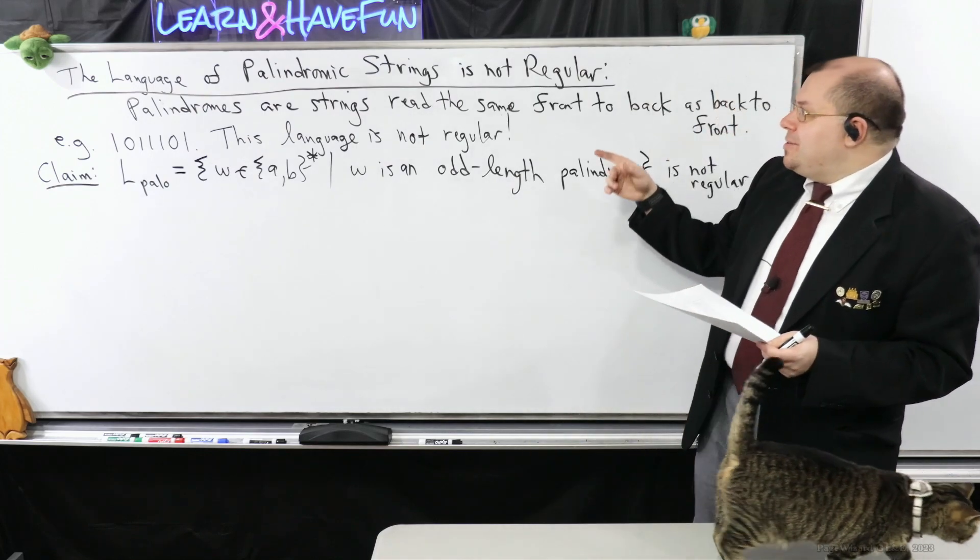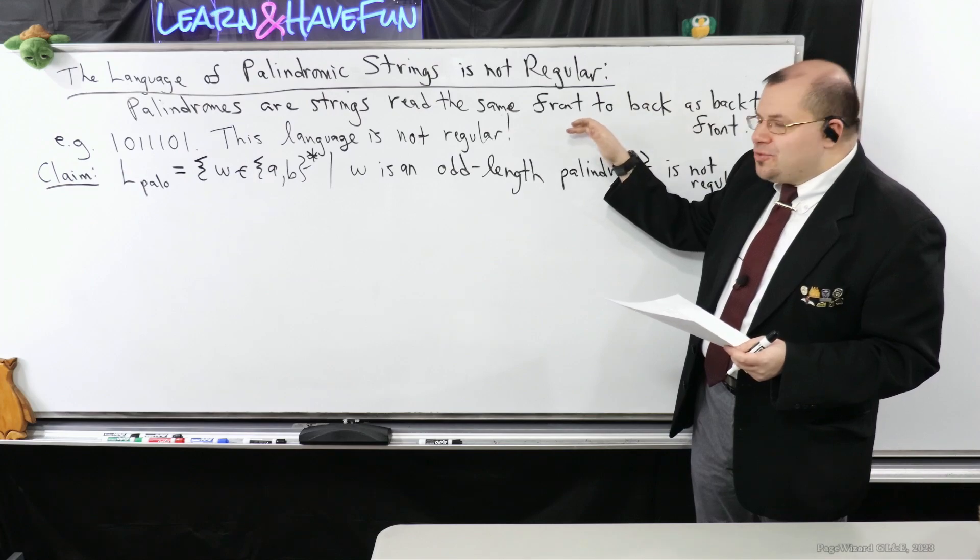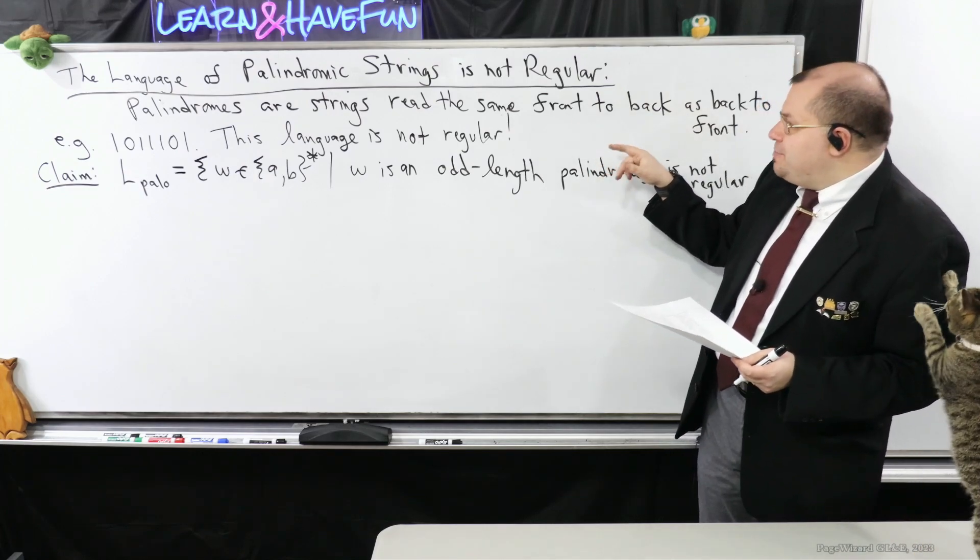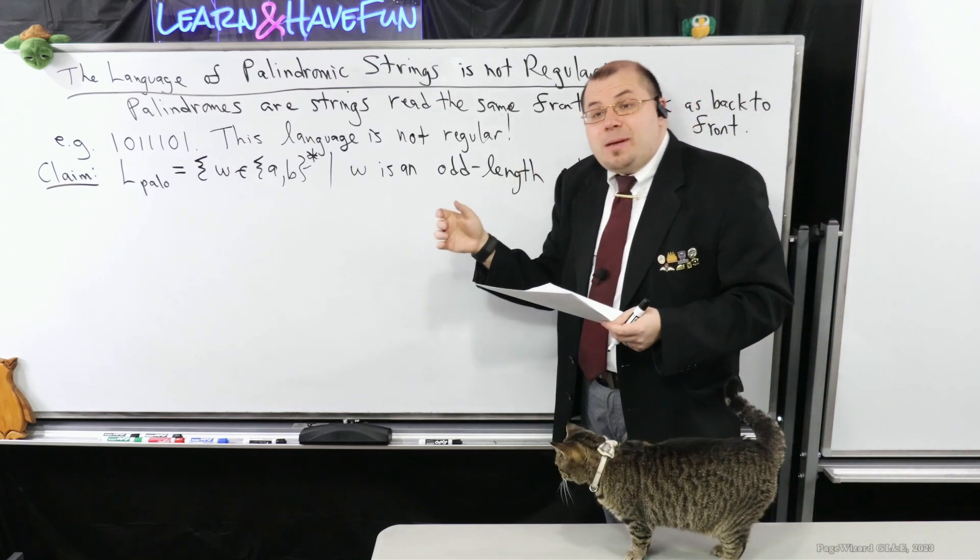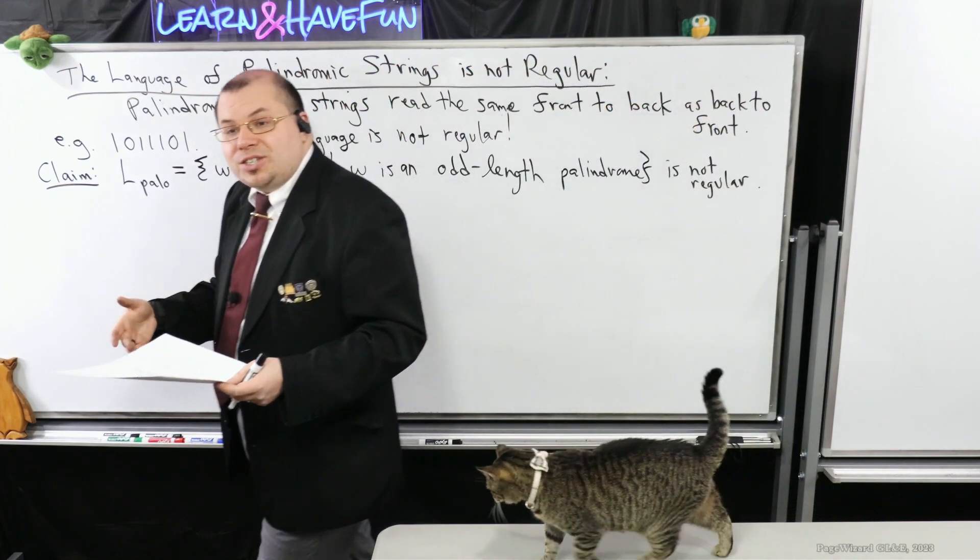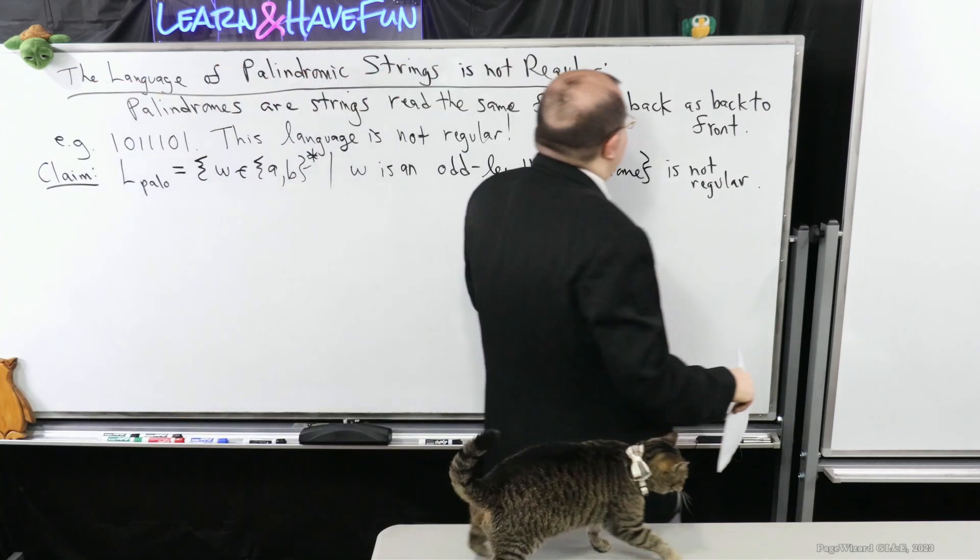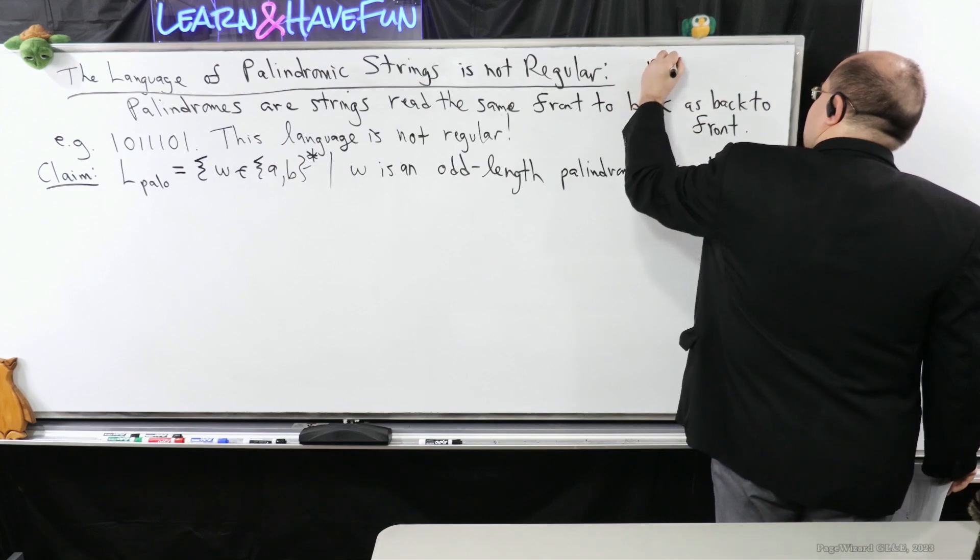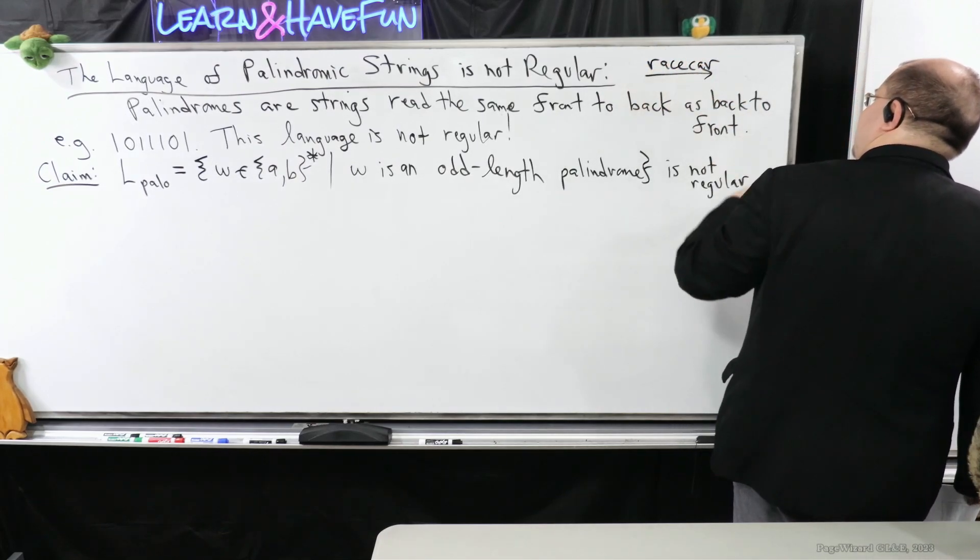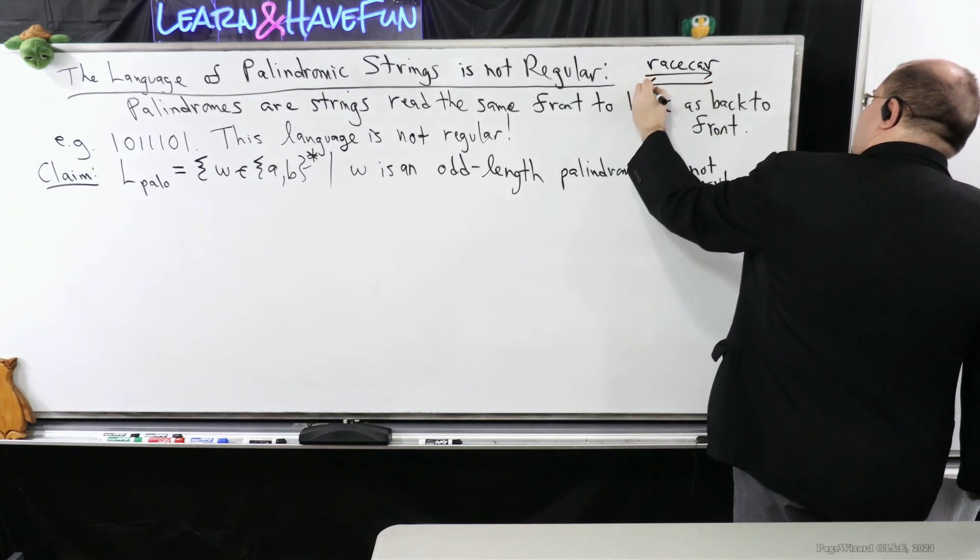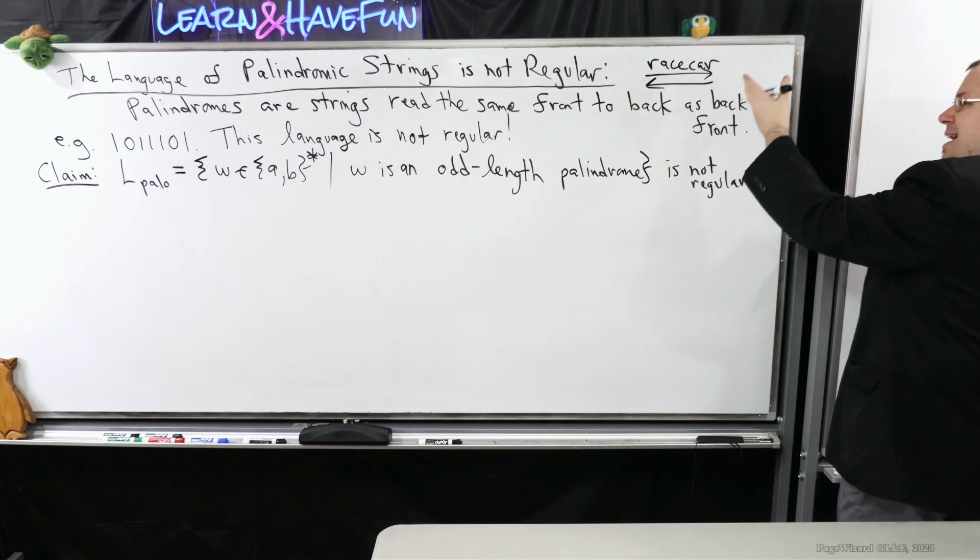So we're going to consider the language of palindromic strings. These palindromes, if you've never heard of these before, they're simply strings that are read the same front-to-back as back-to-front. You may have heard of the word like race car. Race car is a palindrome because if you take the word race car, read it left to right, it says race car. If you read it from right to left, it's race car. So this is an example of a palindrome.